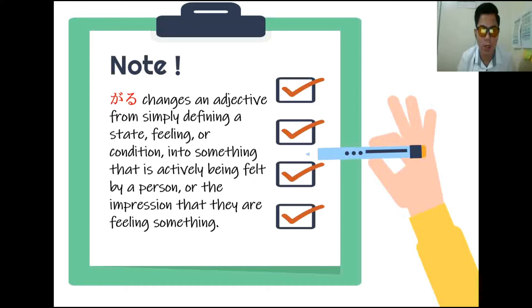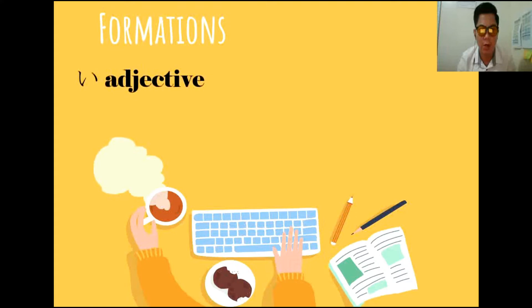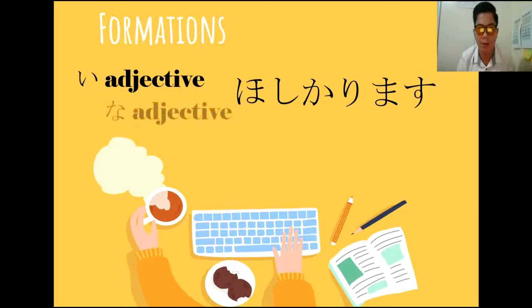Ito yung magiging formation niya. For i-adjective, for example, we have hoshii. Si hoshii ibig sabihin want something — ito yung last topic natin. Si hoshii belongs to i-adjective. Then for i-adjective, we have to omit i, then add garimasu.